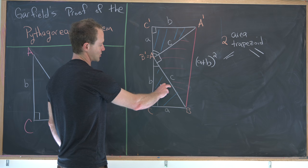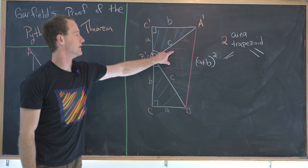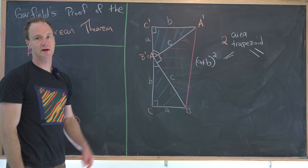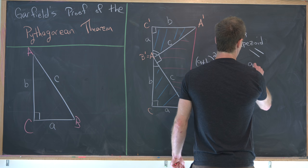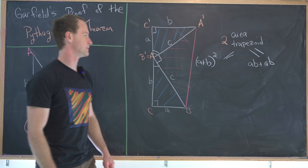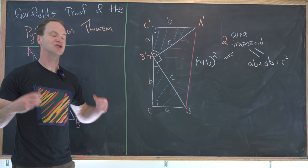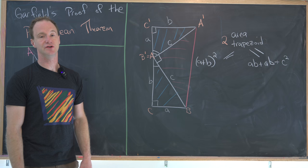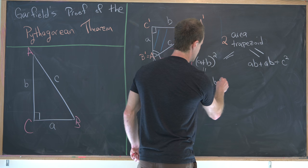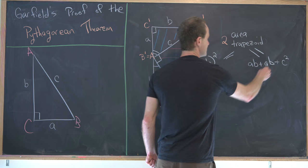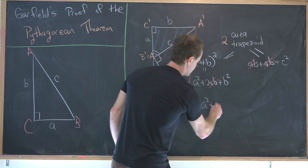We have two blue congruent right triangles and one red isosceles right triangle. Twice the trapezoid area by the standard formula gives (A + B)², since both the parallel sides and the height equal A + B. Calculating twice the area by sub-triangles gives AB + AB + C², where AB comes from each blue triangle and C² from the red isosceles right triangle. Expanding (A + B)² gives A² + 2AB + B², and canceling 2AB from both sides leaves A² + B² = C², exactly what we wanted.